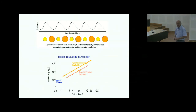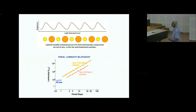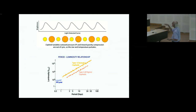There is another kind of variable star called RR Lyrae variables. They also have a period-luminosity relationship, but a rather subtle one — their luminosity is more or less independent of their period. So they are like standard candles.